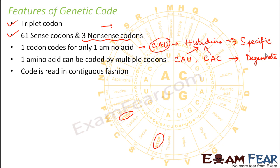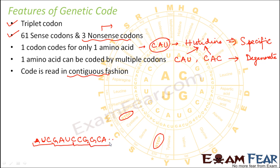The code is read in a contiguous fashion, meaning in a continuous manner with no punctuation in between. So if you have a long sequence, you simply segregate it into groups of three to determine which amino acid each codon codes for. The code is also nearly universal — it is applicable for all organisms, from tiny bacteria to human beings. However, there are a few exceptions, such as some organisms where this genetic code is not applicable.